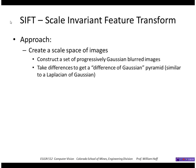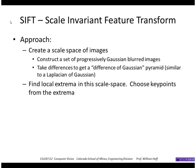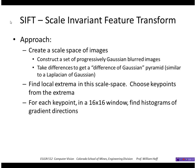Just a brief review of SIFT: it involves creating a scale space of images that are progressively blurred with a Gaussian, taking differences to get a difference of Gaussian pyramid, and looking for local extrema in the scale space. Those extrema points are key points. For each key point, it calculates a histogram of gradient directions in a window surrounding that key point, making it a very rich descriptor or feature vector.